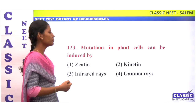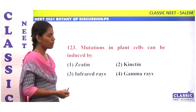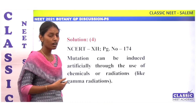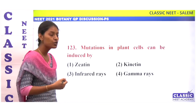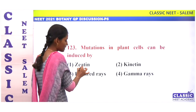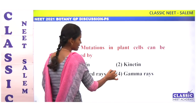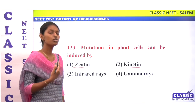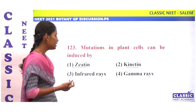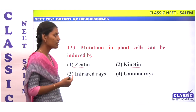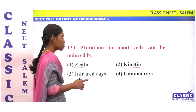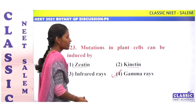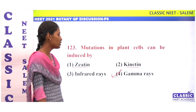Mutations in plant cells can be induced by chemicals or radiations. Zeatin and kinetin are plant growth regulators that perform physiological roles. Infrared rays are not used for mutation. Gamma rays are commonly used to induce mutations in plants. Option 4.